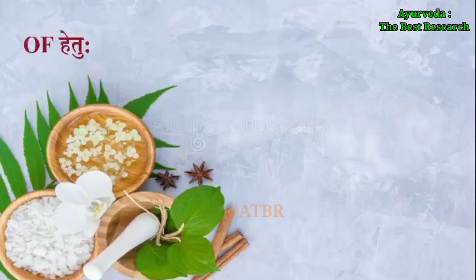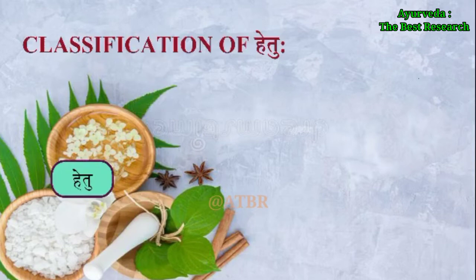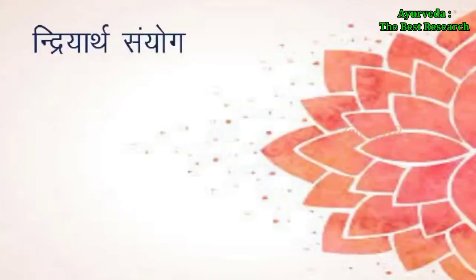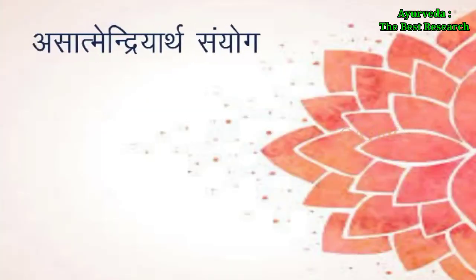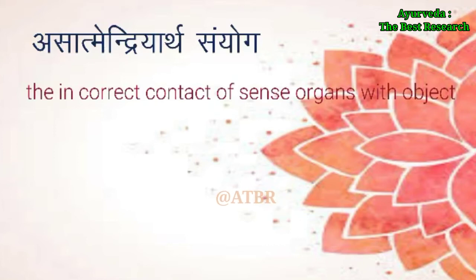The classification of hetu includes three main types: asatmendriyarthasamayoga, pradhanaparada, and parinama. Asatmendriyarthasamayoga means the incorrect contact of the sense organs with their objects, and it is further classified into three subtypes: hinayoga, mithyayoga, and atiyoga.